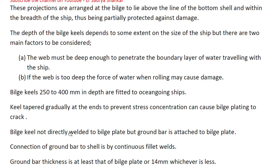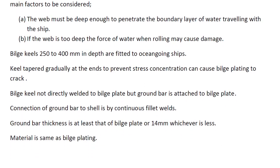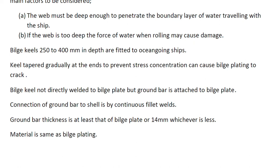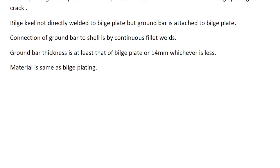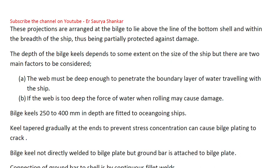Bilge keel tapered gradually at the end to prevent stress concentration that can cause bilge plating to crack. Bilge keel is not directly welded to bilge plate, but ground bar is fitted to bilge plate. Connection of ground bar to shell is by continuous fillet weld. Ground bar thickness is at least that of bilge plate or 14 mm whichever is lesser. Material is same as bilge plating.